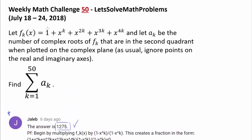So now let's read the question. Let f sub k of x be 1 plus x to the k power plus x to the 2k power plus x to the 3k power plus x to the 4k power. If you've tried out a lot of problems on complex numbers before, you know immediately that this is probably going to have something to do with roots of unity, because expressions of the form 1 plus x plus x squared plus x cubed plus x to the 4th and so on are so common in roots of unity problems.